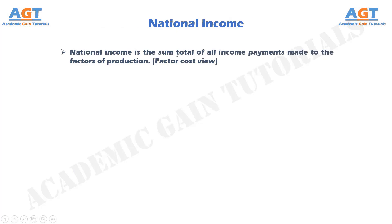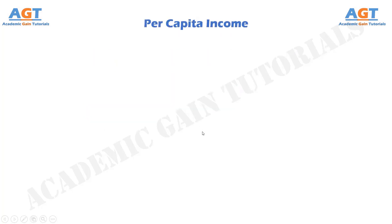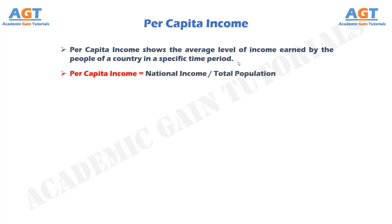National income is the sum total of all income payments made to the factors of production. The components of national income include rents, compensations to employees, wages, interest, and profits. Per capita income shows the average level of income earned by the people of a country in a specific time period. Per capita income is a ratio of the national income and the total population of a country.